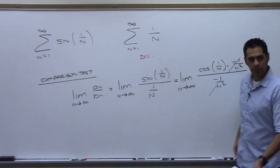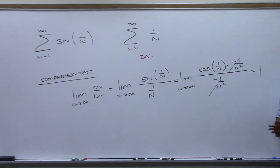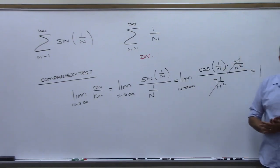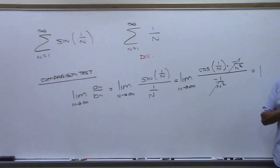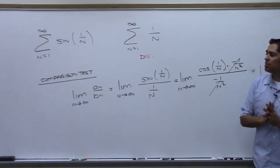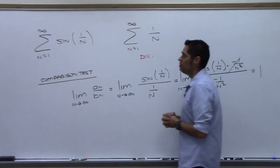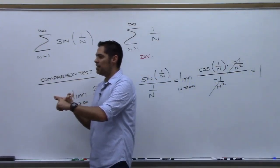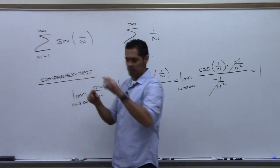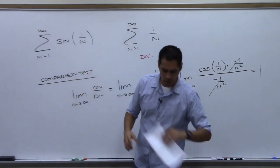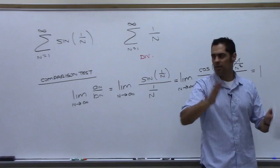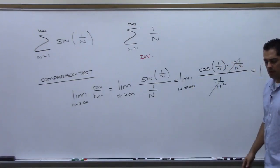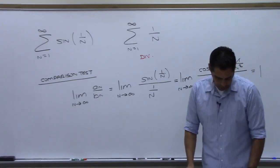If you got zero, you could choose another series that is convergent — a different comparison. Yes, some of us will have different answers depending on what series we choose. There are problems where you can use the integral test, comparison test part one or two, or part three, and they all work depending on the student's approach.